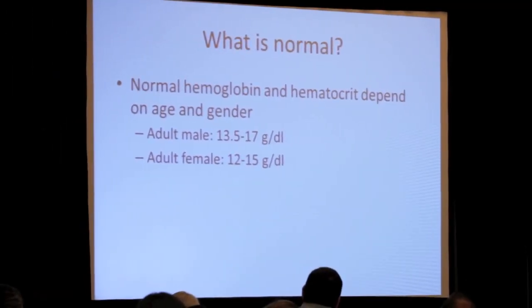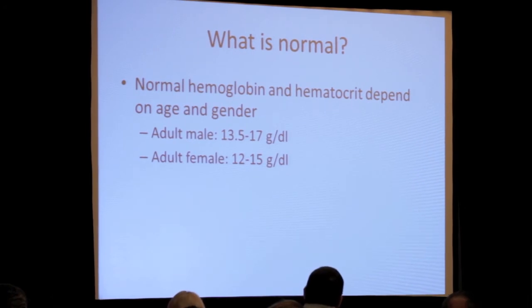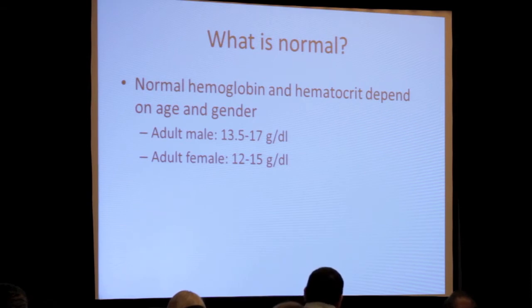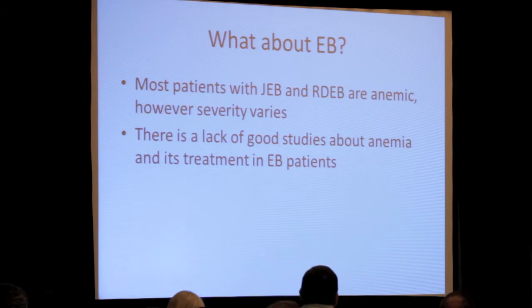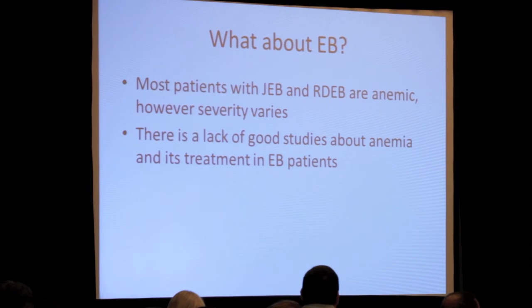Normal values for hemoglobin and hematocrit depend on both age and gender. They are fairly high in newborns, then dwindle down before rising again in infancy. For most adult males the normal range is about 13.5 to 17, and for adult females between 12 and 15 grams per deciliter. For most patients with recessive dystrophic EB or severe junctional EB, we almost never see patients within that normal range. Most patients with RDEB and JEB are going to be somewhat anemic, although the degree of severity can vary depending on whether any type of treatment has been instituted.